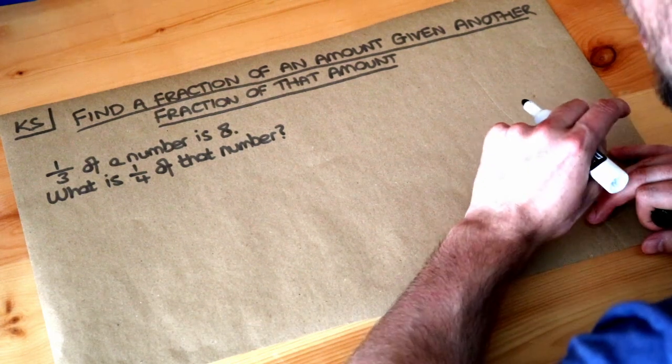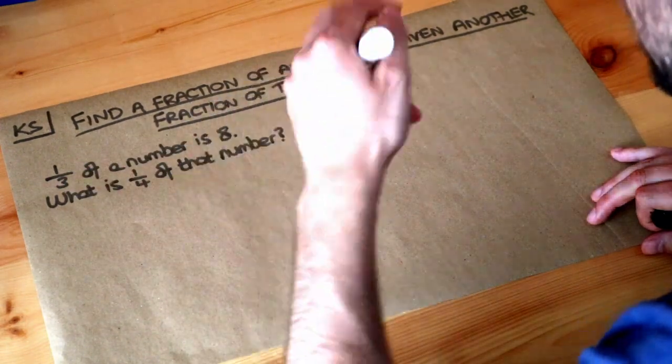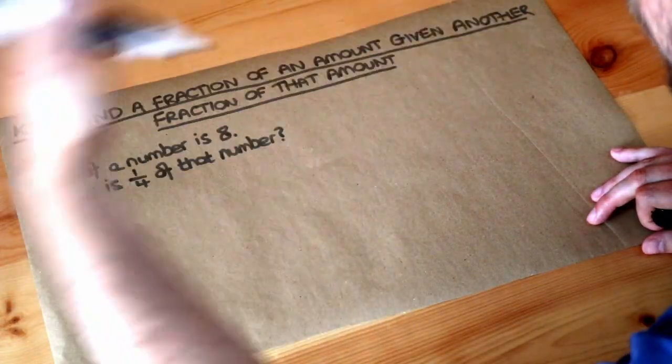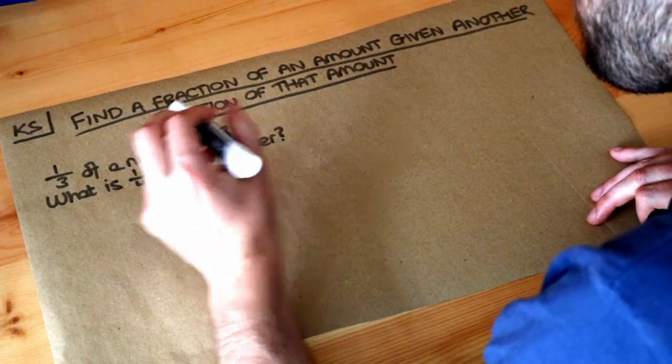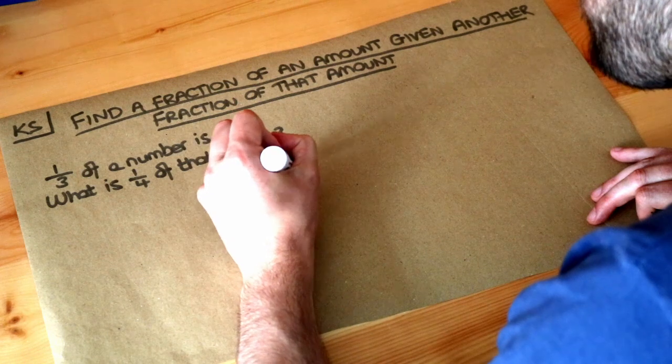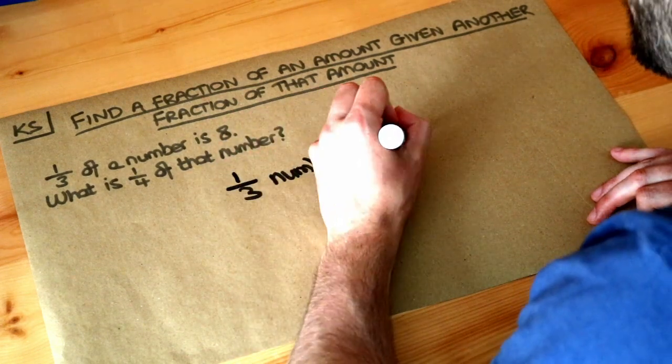Now in a previous video we saw if we knew what a third of a number is, we could work out what the whole of that number, the original number is. So let's just write down the information we have. A third of the number, whatever that number is, is equal to 8.